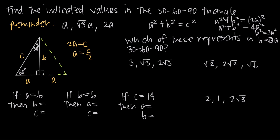So what we can say about the general side lengths of a 30-60-90 triangle is this: if we call the shortest side A, then the longer leg is √3 · A, and the hypotenuse is 2A. This relationship always holds, no matter what the actual lengths of the sides are.